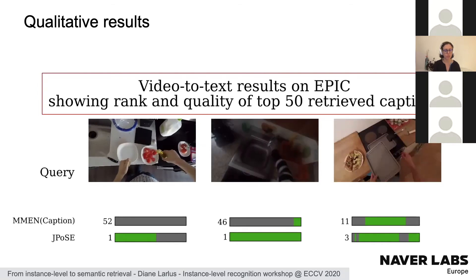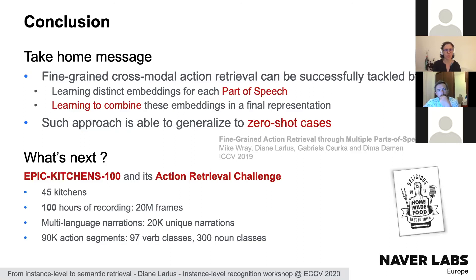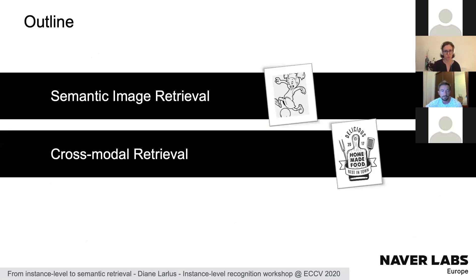To conclude Part 2: fine-grained cross-modal action retrieval can be successfully tackled by learning distinct embedding spaces for each part of speech and learning to combine these into a final representation. This approach also generalizes to zero-shot cases. Looking ahead, Epic Kitchens 100 is now available with a new action retrieval challenge featuring more kitchen hours of recording.